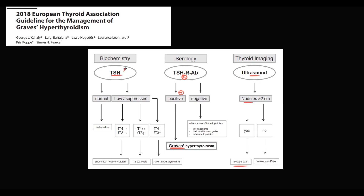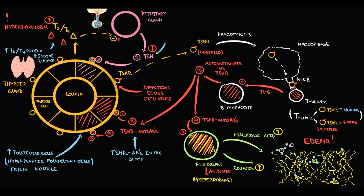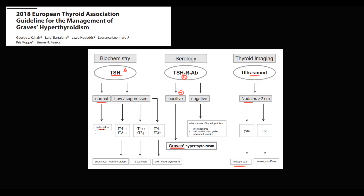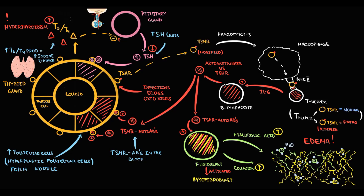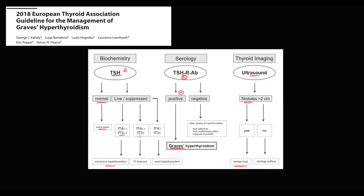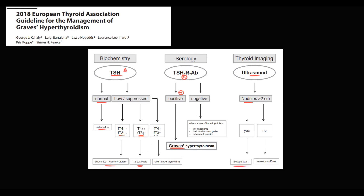TSH levels help determine the state of the thyroid. Normal TSH indicates euthyroidism. In Graves' disease, TSH is typically low or very low. If TSH is low but thyroid hormone levels are normal, this is subclinical hyperthyroidism. As the condition progresses, thyroid hormone levels increase — initially T3 rises, a state called T3 toxicosis. In severe Graves' disease, TSH is low with both T3 and T4 elevated.